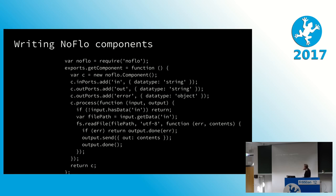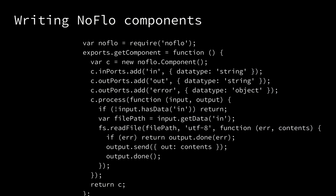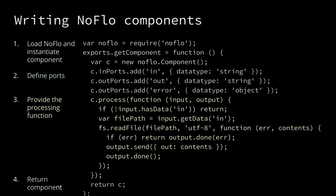There are two concepts in NoFlow: components and the graph that determines how they're connected. Components are written in JavaScript, CoffeeScript, TypeScript, or any language that compiles to JavaScript. You load the NoFlow library, provide a getComponent interface, and instantiate a NoFlow component. You add input ports — with optional types and descriptions — and output ports. Then the important part: you provide a processing function that's called every time your component receives a packet.